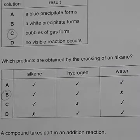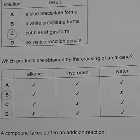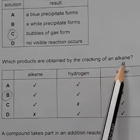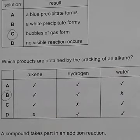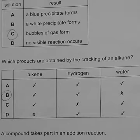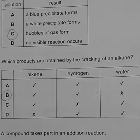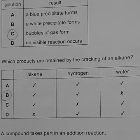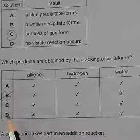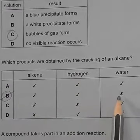Question 38, November 2008: Which products are obtained by cracking of alkanes? Cracking means breaking long-chain hydrocarbons. After cracking, simpler alkenes and hydrogen are produced — not water. So the products are alkenes and hydrogen. Option B is the answer.